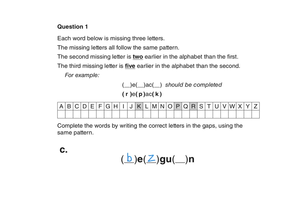We know that the third missing letter is five earlier in the alphabet than the second, so we'll count backwards five from Z. One, two, three, four, five. So it should be the letter U if we followed the rules.